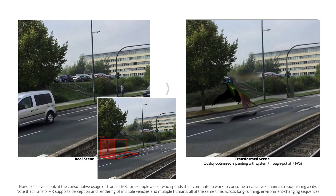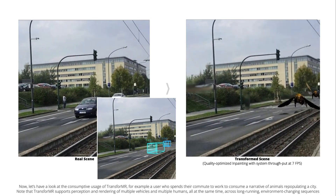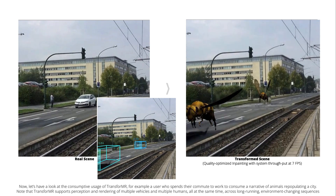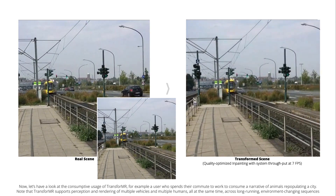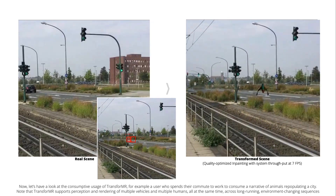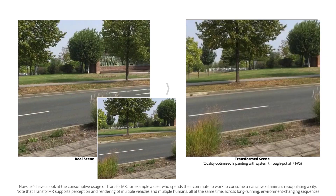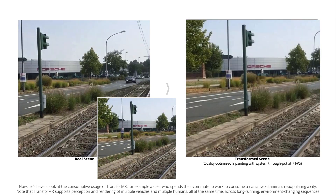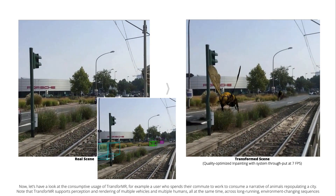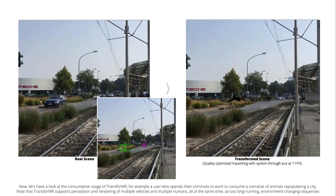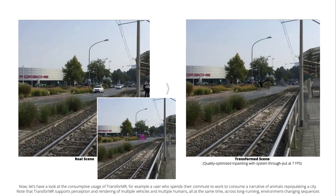Now let's have a look at the consumptive usage of Transformer, for example a user who spends their commute to work to consume a narrative of animals repopulating a city. Note that Transformer supports perception and rendering of multiple vehicles and multiple humans all at the same time across long-running, environment-changing sequences.